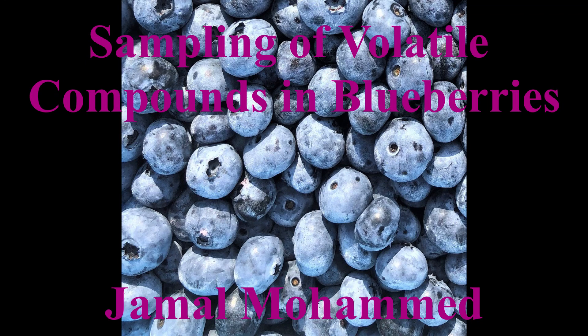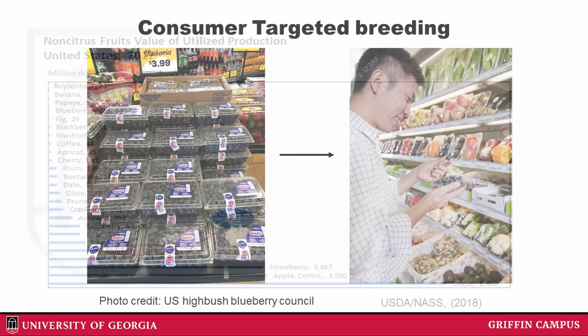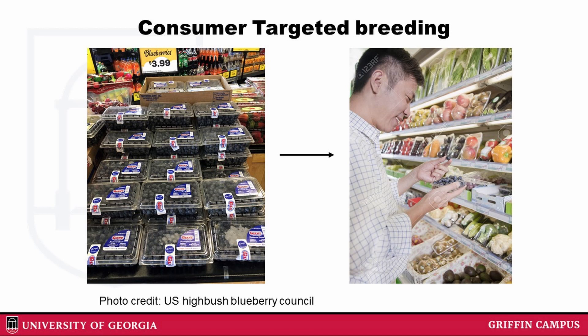Today I am going to give you an insight about blueberries and their flavors. Blueberries have become one of the largest small fruit commodities in the U.S. In the southeastern U.S., it is an integral part of the economies and culture of the local people. In 2017, the total value of utilized production of cultivated blueberries was 822 million U.S. dollars. The recent increase in production is due to high consumer demand.